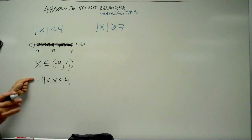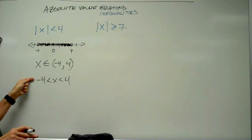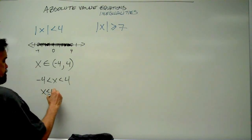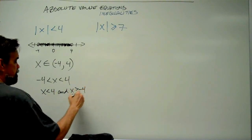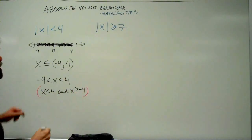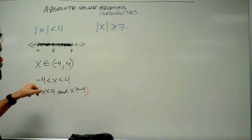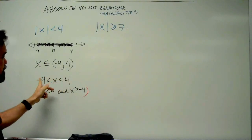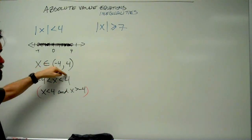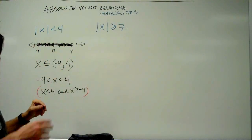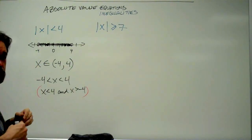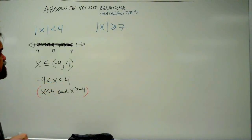You can write it as negative 4 less than x less than 4, or you can say x is less than 4 and x is greater than negative 4. I really think it's more straightforward to write it as a compound inequality, because it solidifies in your mind that x has to be between these two numbers. Please put the smaller number on the left and the larger number on the right, just like on the number line — otherwise it gets confusing.